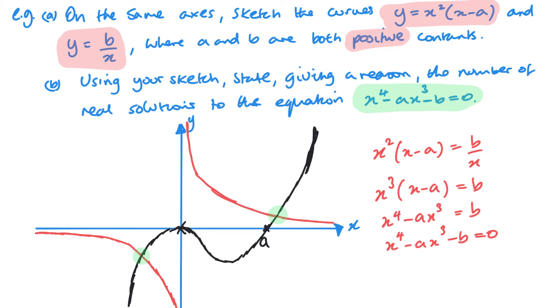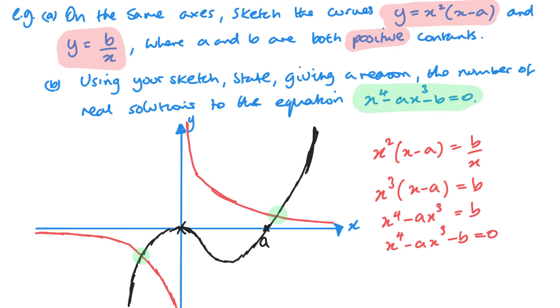So all that's left is to finish it with a sentence or two. Something like, and there we have it. It's quite useful and important really to also mention the word real solutions because we've got two points of intersection. So there are two real solutions. However, there may be more solutions if we considered complex numbers.